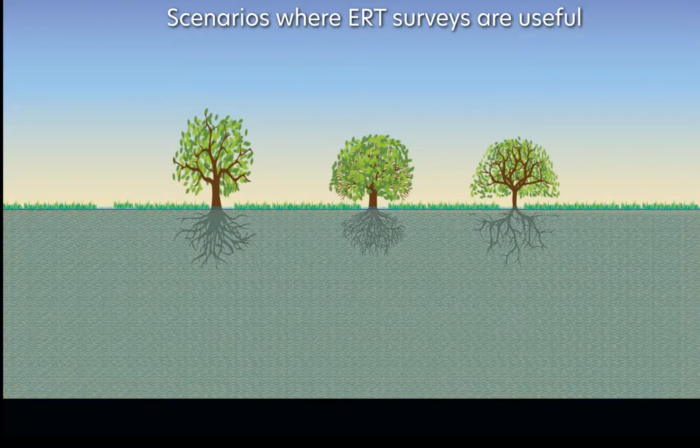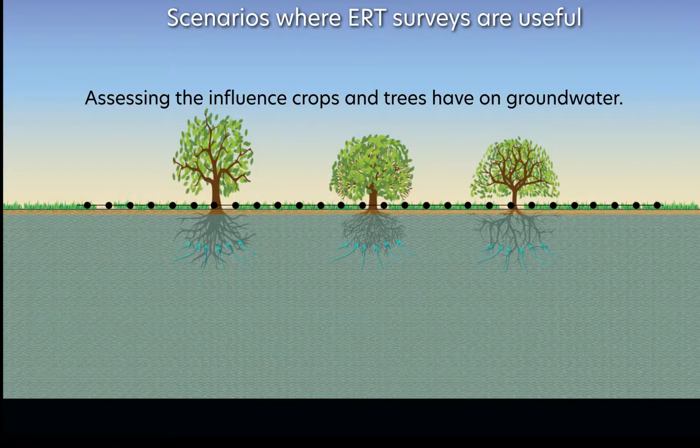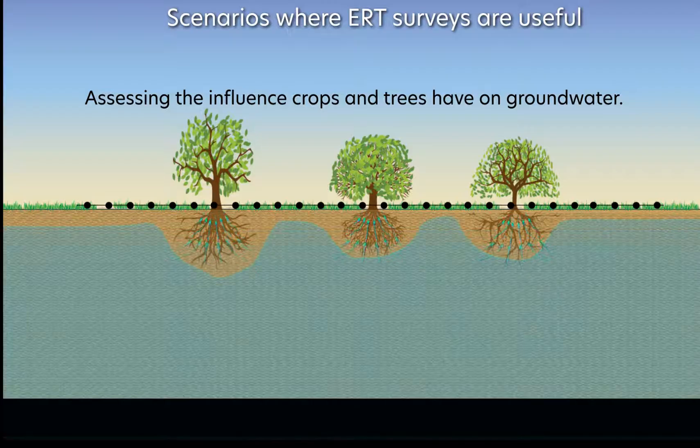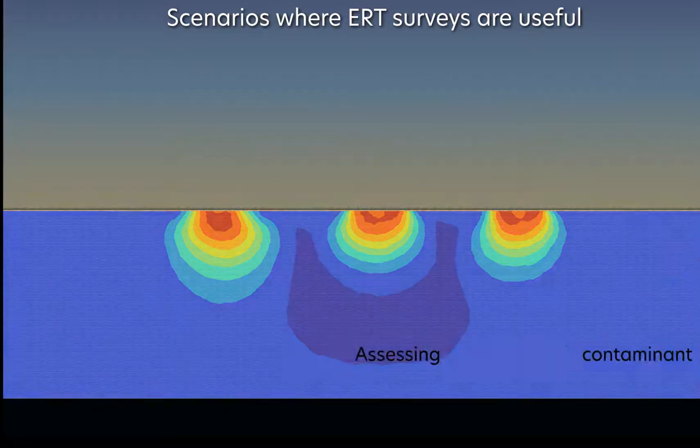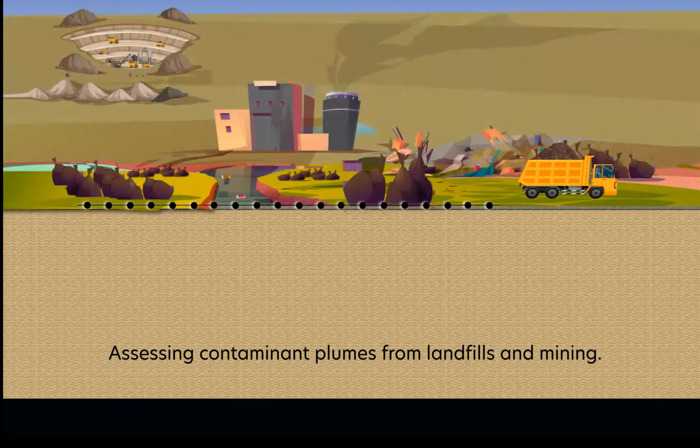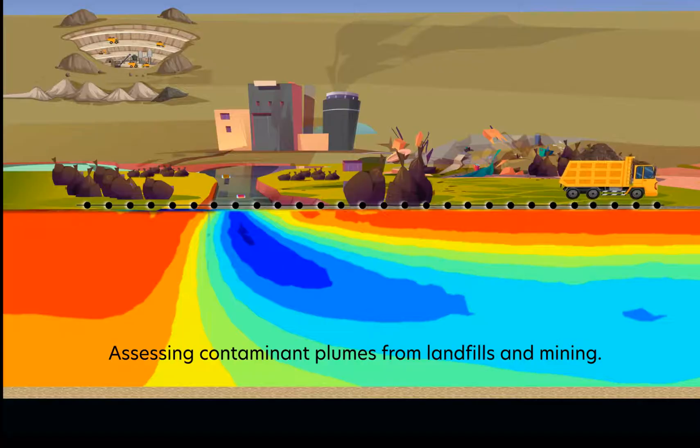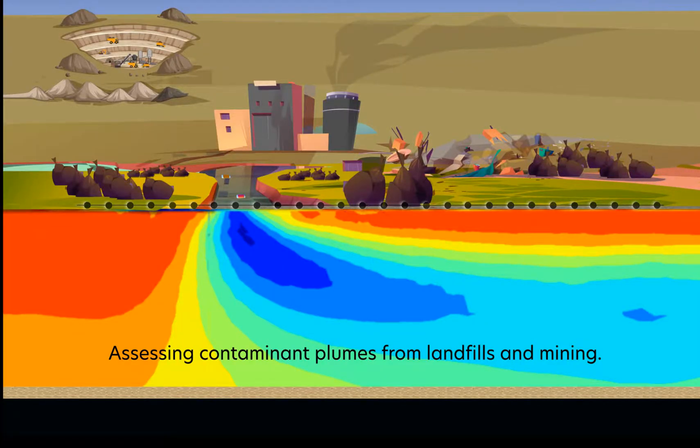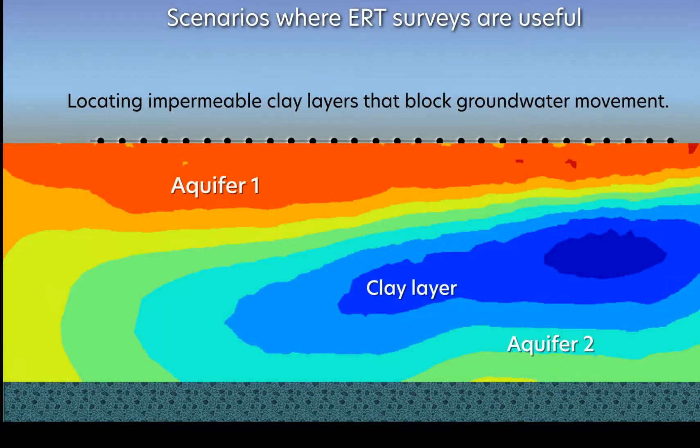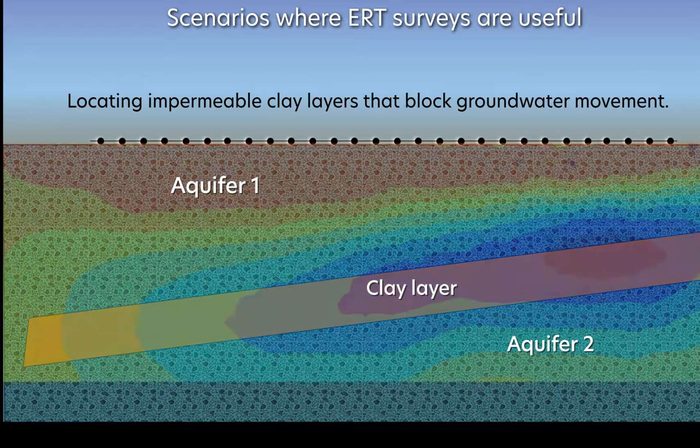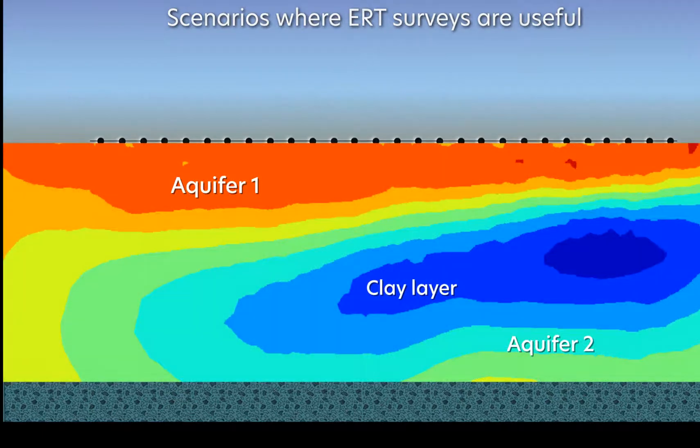When interpreted with care, ERT surveys can also be used for assessing the influence crops and trees have on groundwater, finding contaminant plumes from landfills or mining because the more conductive areas, those with low resistivity, may indicate polluted groundwater, and locating impermeable clay layers that block groundwater movement as those layers will appear as zones of very low resistivity.